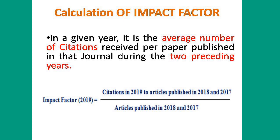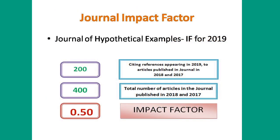Calculation of impact factor: in a given year, it is the average number of citations received per paper published in that journal during the two preceding years. Suppose we are calculating the impact factor for the year 2019 for a particular journal. We consider articles published in 2018 and 2017, and how many times those articles were cited in 2019, divided by the total number of articles published in 2018 and 2017.